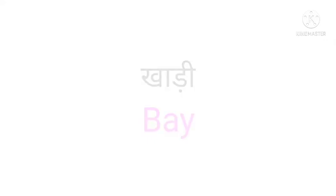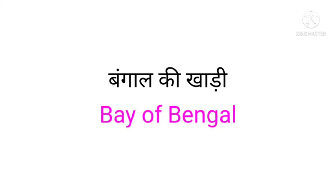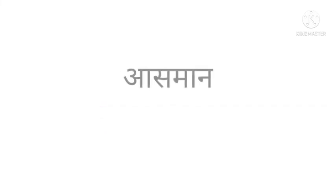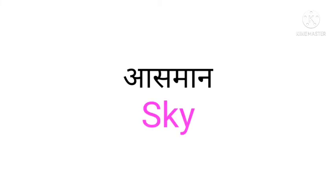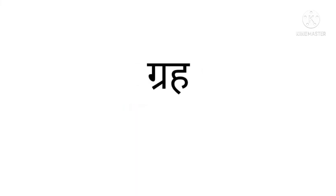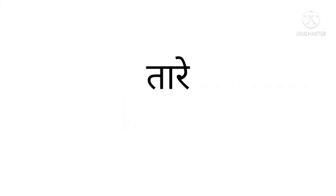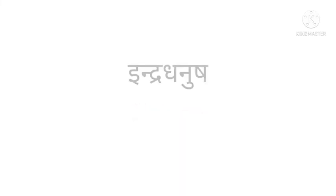Next is 'kadi' — we say in English: bay, like Bay of Bengal. Next word is 'asman' — we say in English: sky. Next word is 'badal' — we say in English: cloud. Next word is 'graha' — we say in English: planet.